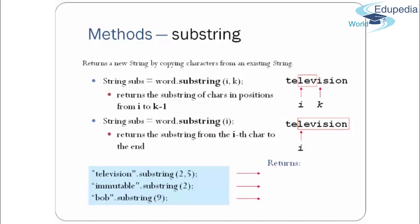Another important method is substring(). It returns a new string by copying characters from an existing string. Using word.substring(i, k) picks up characters from index i up to but not including k — returning characters from position i to k-1. Using word.substring(i) with only one argument returns the substring from position i to the end of the string.